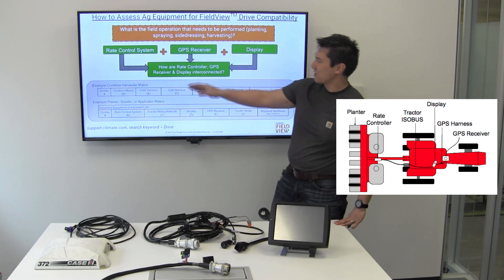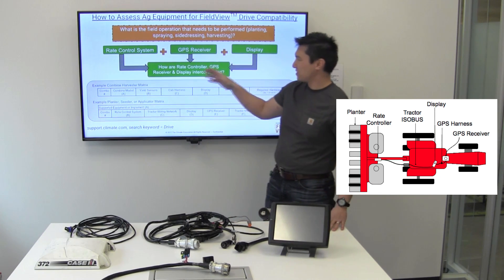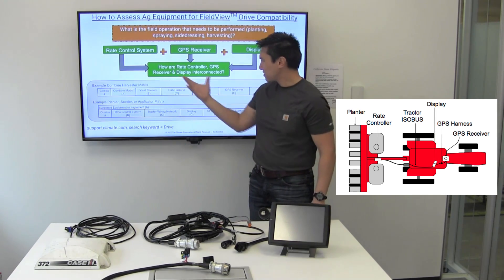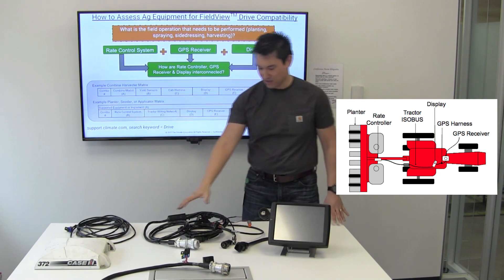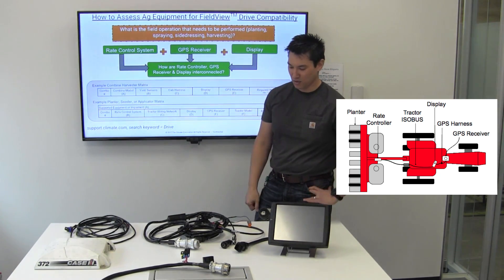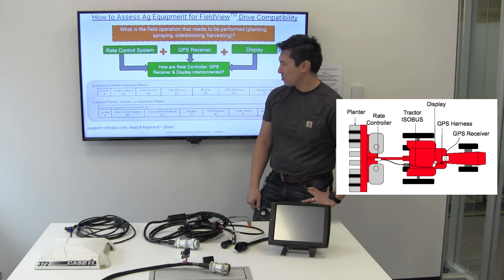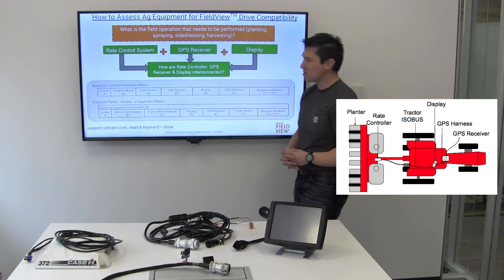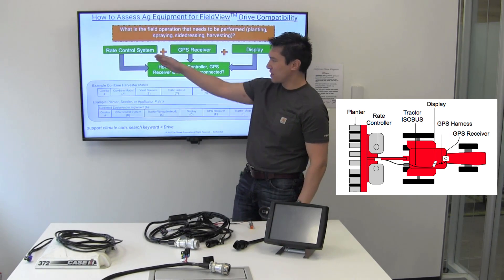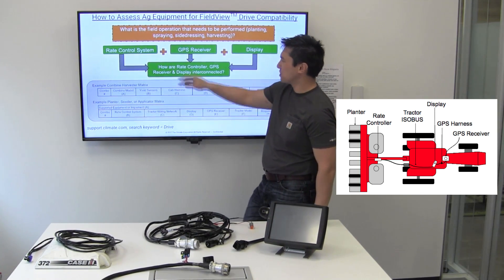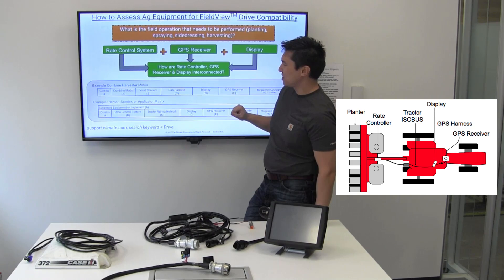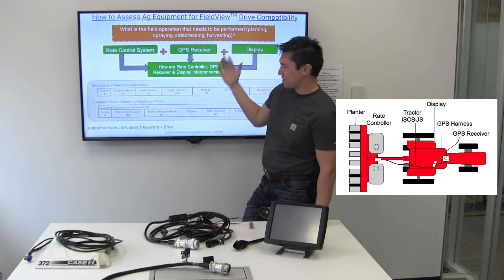With that said, that is how we tie rate control, GPS, and the display all together. In this case, the essence of it all is the AE2872 isobus harness. Kind of the same thing goes for combines. Again, we're looking at rate or yield, a yield measurement, and a GPS location, and then how are these things all interconnected.